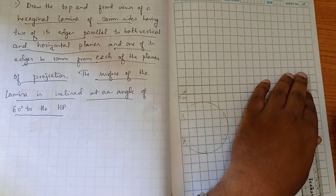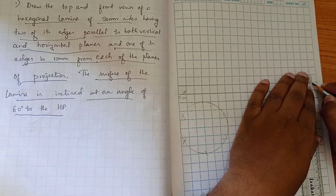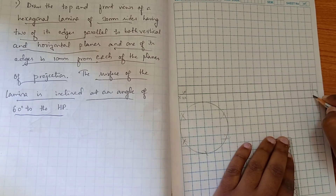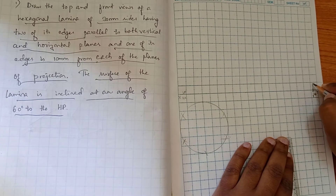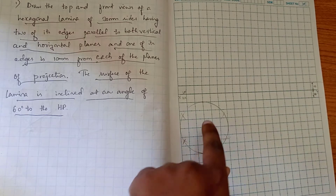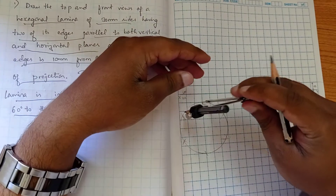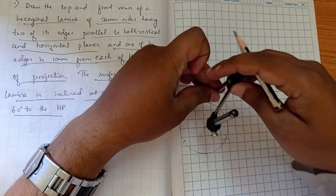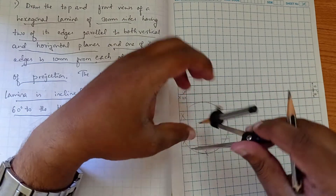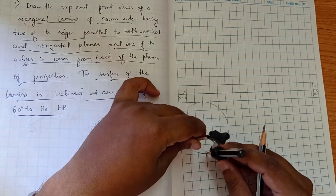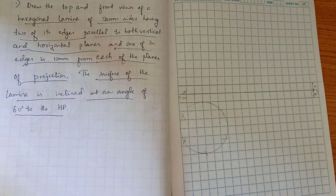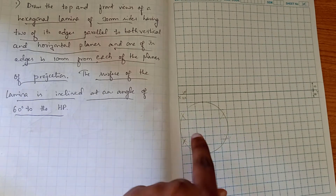I can show the 10mm distance here — this is 10mm, and similarly this is also 10mm. After marking that point, I have drawn a circle of dimension 30mm. Then, measuring 30mm from this point, I have cut the arc.